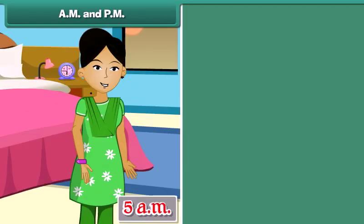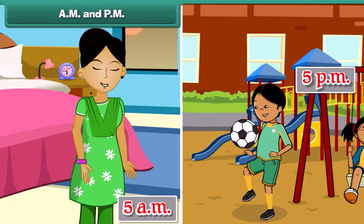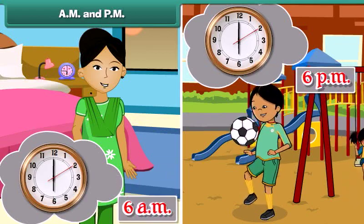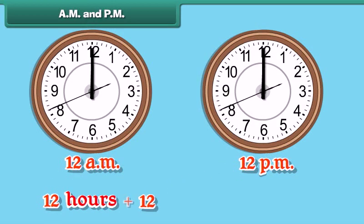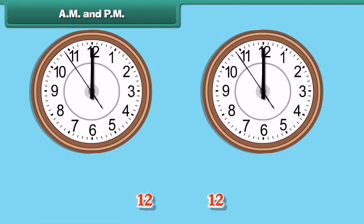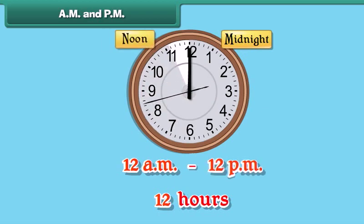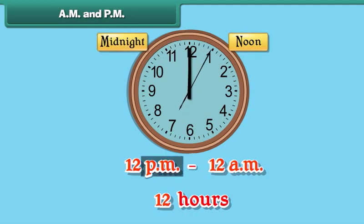AM and PM. Your mother wakes up at 5 o'clock in the morning; you go out to play at 5 o'clock in the evening. This means the clock strikes 5 twice in a day — once in the morning and once in the evening. This is true of every hour from 1 to 12, because there are 24 hours in a day. The 24 hours are divided into two periods of 12 hours each. The first period, from 12 midnight to 12 noon, is denoted by AM. The second period, from 12 noon to 12 midnight, is denoted by PM.